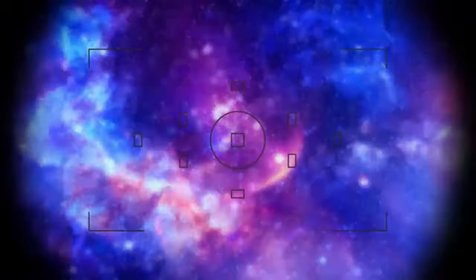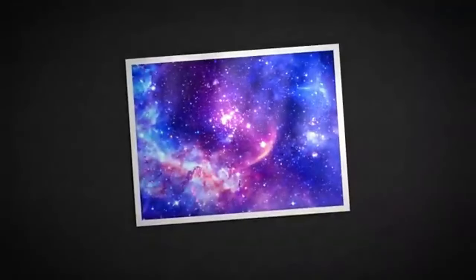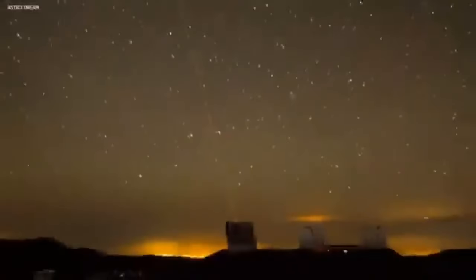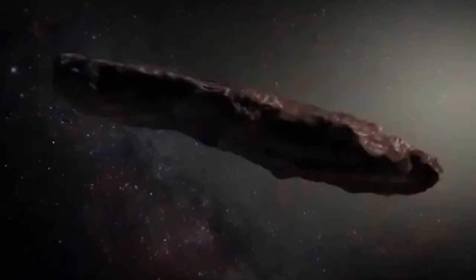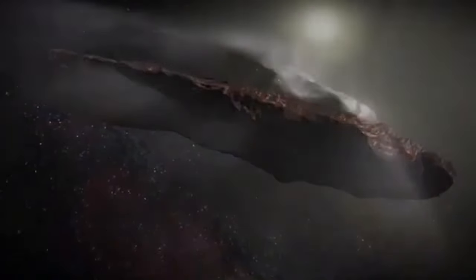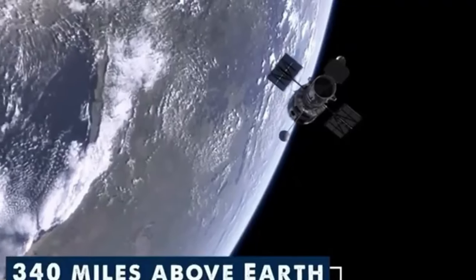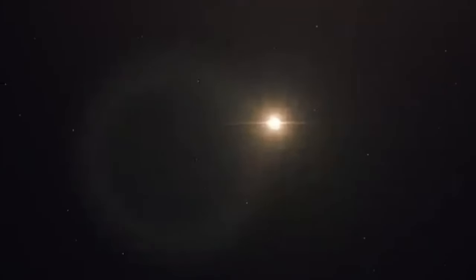Adding to the intrigue, Oumuamua's surface composition further deepened the mystery. Its reddish coloration indicated a rich and complex mixture of organic molecules, hinting at the possibility of extraterrestrial origins. This fascinating aspect ignited speculation about the nature of Oumuamua and its place within the grand tapestry of the universe. Some scientists began to ponder the tantalizing prospect that Oumuamua could be an artificial construct, a remnant of an advanced civilization's interstellar expedition.